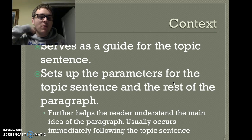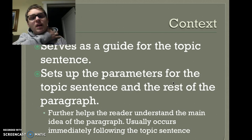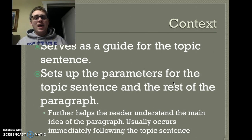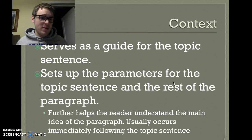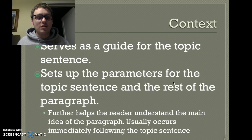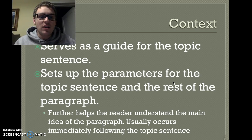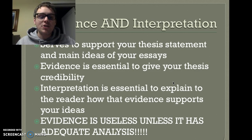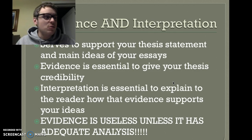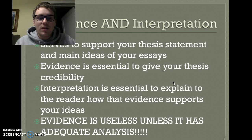The second part is context, which is similar to the context in your introduction. Context serves as a guide for the topic sentence — it sets up the parameters for the topic sentence and the rest of the paragraph. It helps us understand the main idea and usually occurs immediately following the topic sentence. And then there is evidence and interpretation. Evidence is key to supporting your thesis, but evidence is useless unless you have adequate interpretation. Make sure you include both.